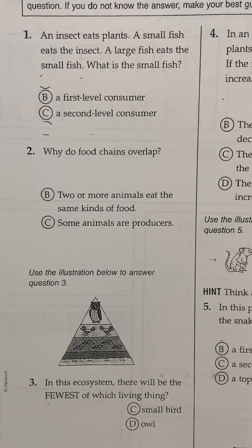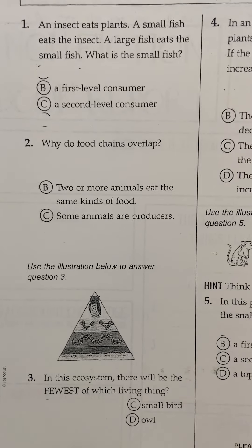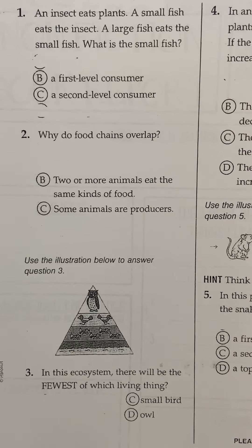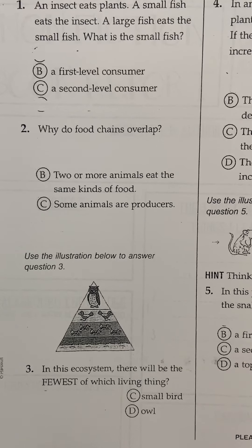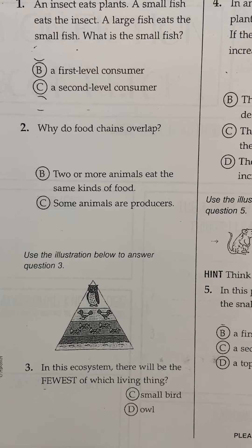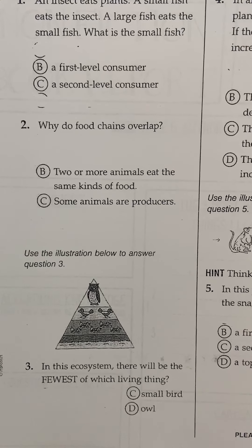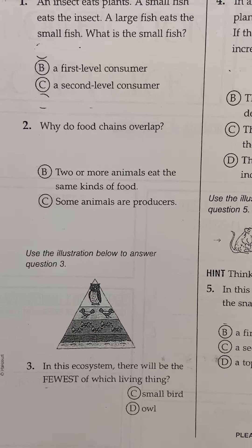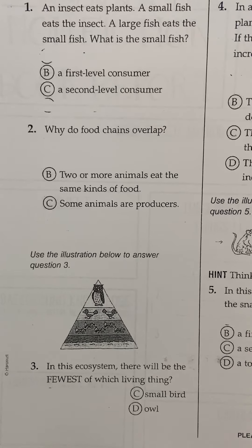Question two: why do food chains overlap? Is it because two or more animals eat the same kinds of food, or because some animals are producers?